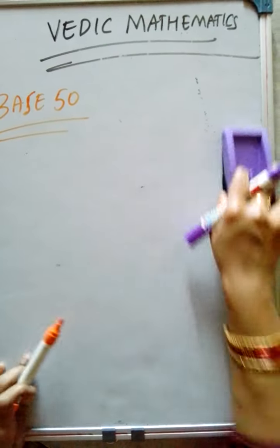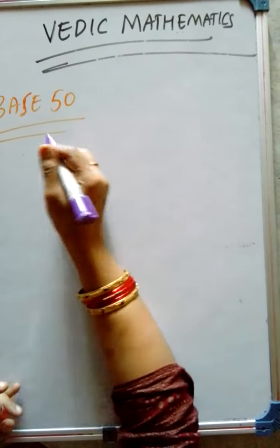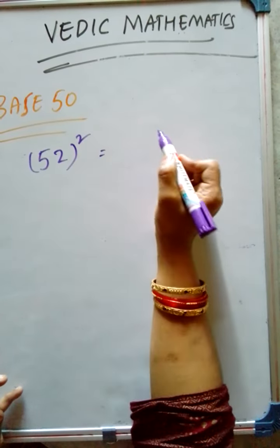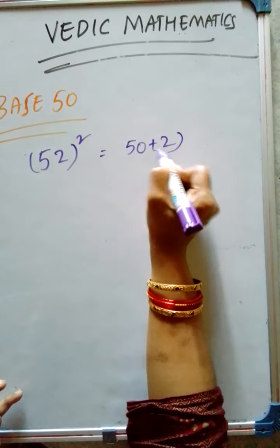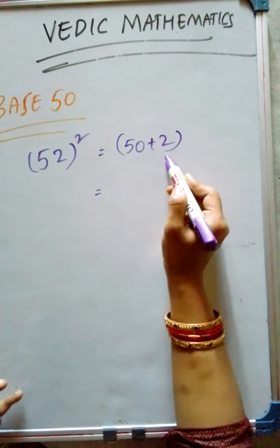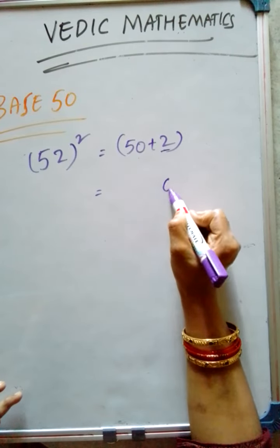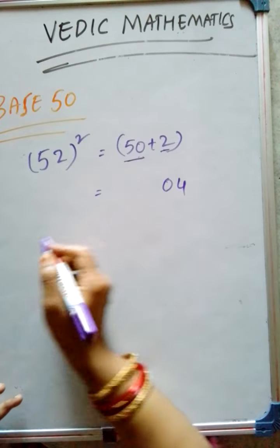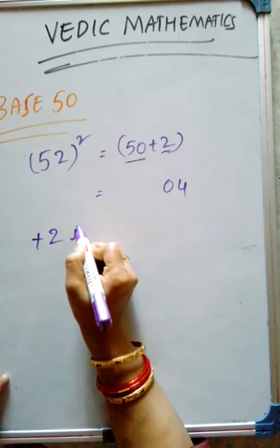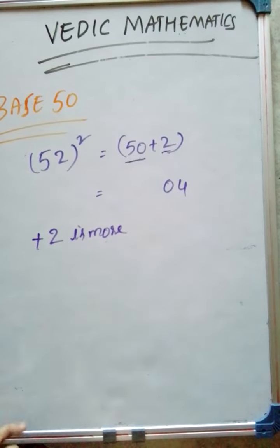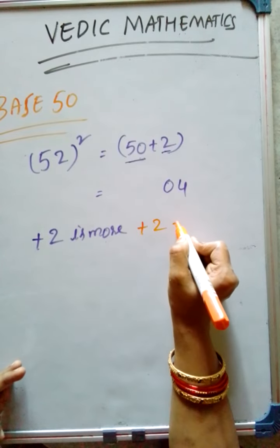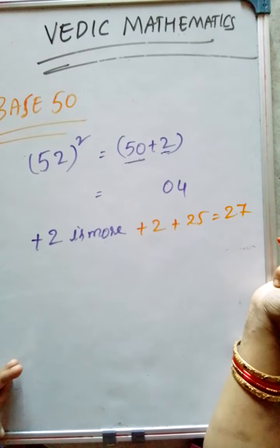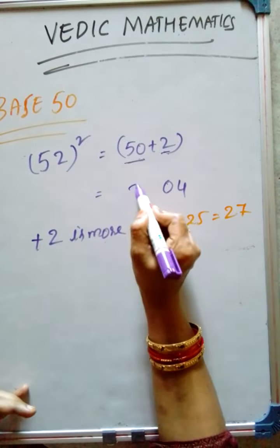Now, till now we are subtracting. Now, let us take how we are going to add. 52 square — we have to find 52 square. How much? 50 plus 2. First of all, we have to do 2 square, that is nothing but 04. Now, here 50 plus 2 — how much it is more? Plus 2 is more. What we have to do? We have to add plus 2 with 25. How much? That is 27. Answer is 2704.